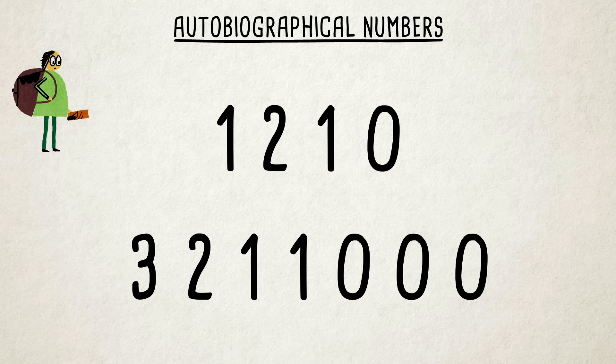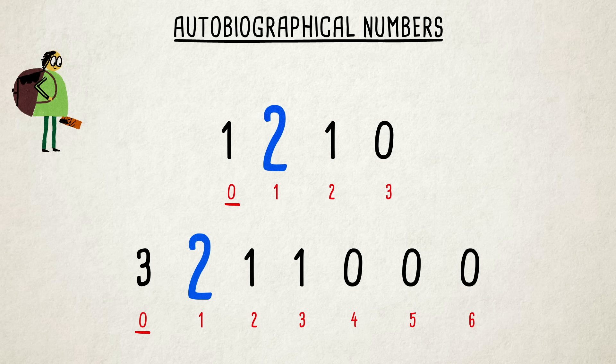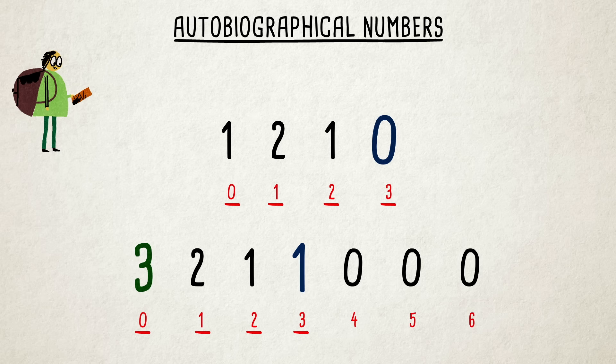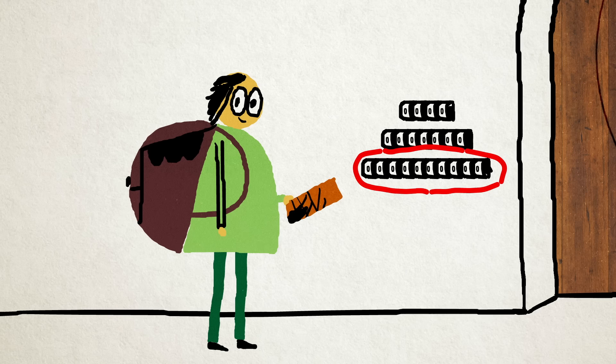Each of an autobiographical number's digits indicates how many times the digit corresponding to that position occurs within the number. The first digit indicates the quantity of zeros, the second digit indicates the number of ones, the third digit the number of twos, and so on until the end.